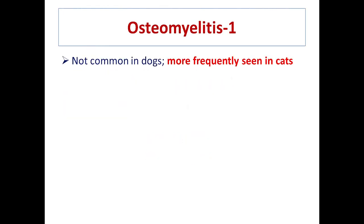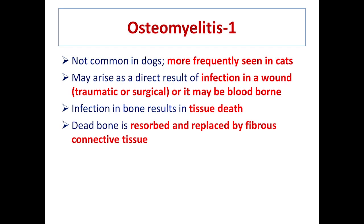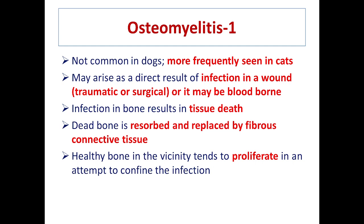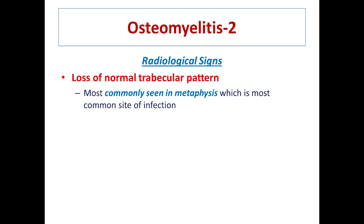Osteomyelitis is more common in cats than dogs. The possible cause may be a deep cat bite; it may arise due to bone infection or blood-borne diseases. Like other tissues, infection in the bone may result in tissue death. The dead bone is then reabsorbed and replaced by fibrous connective tissue, with proliferation of healthy bone in the vicinity to confine the infection. Radiologically, there will be loss of the trabecular pattern, especially in the metaphysis, which is the most common site of infection.